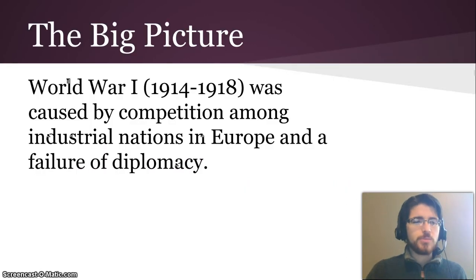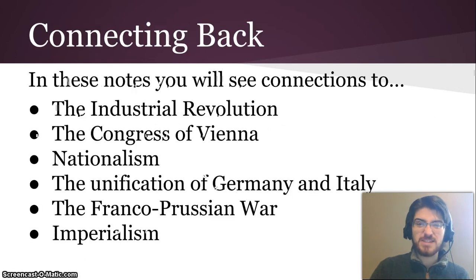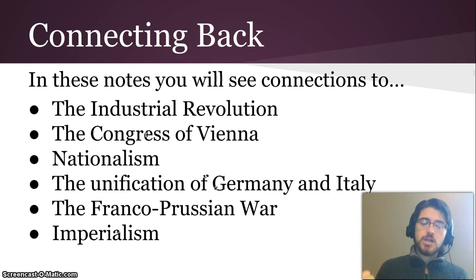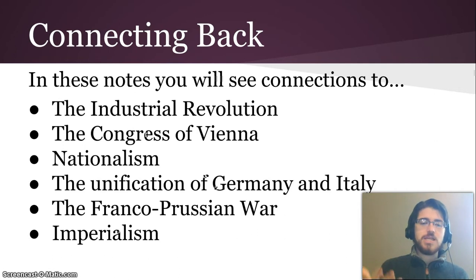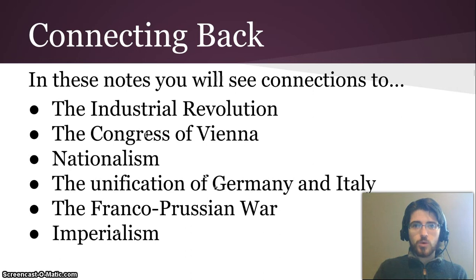Here's the big picture. World War I, which went from 1914 to 1918, was caused by competition among industrial nations in Europe and a failure of diplomacy. In these notes you'll see connections back to the Industrial Revolution, the Congress of Vienna, nationalism, the unification of Germany and Italy, the Franco-Prussian War, and imperialism — because all that stuff we've studied now helps set up the causes for World War I.